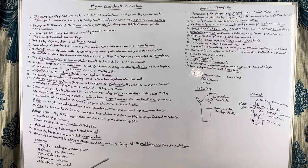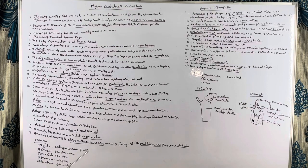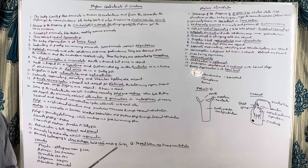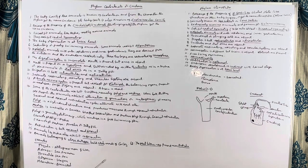Some animals belonging to this phylum build coral reefs; they belong to class Anthozoa. These corals build large-sized reefs. A good example is the Great Barrier Reef, present near Australia, which extends up to 1,200 miles into the sea.